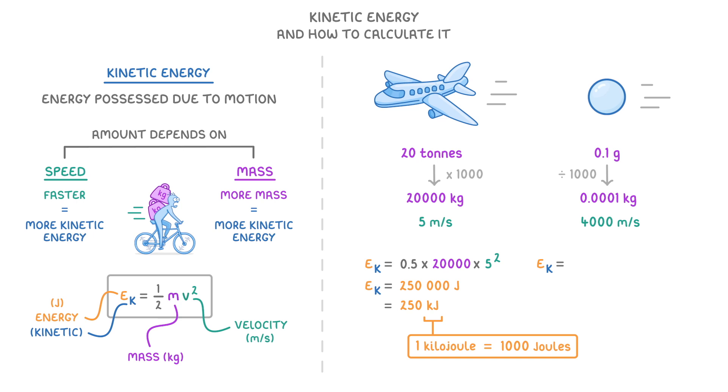Meanwhile for the particle, we do 0.5 times 0.0001 times 4,000 squared, which gives us 800 joules, or 0.8 kilojoules.